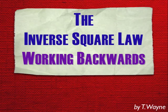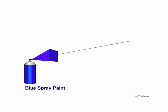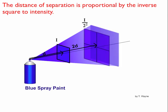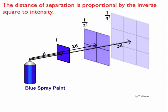This video is going to show you how to use the inverse square law kind of backwards, working backwards with it. The inverse square law says that the distance of separation is proportional by the inverse square to the intensity. So I find a factor of change of how the distance was affected, take the inverse of that factor, and then square it. For example, if the distance was doubled, the inverse square would be one half, and then squared gives one fourth — so the intensity would be one fourth.